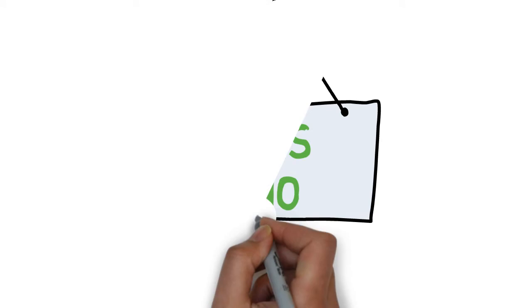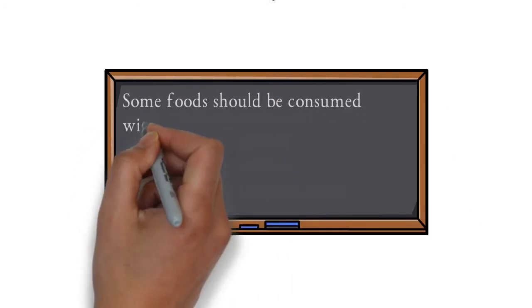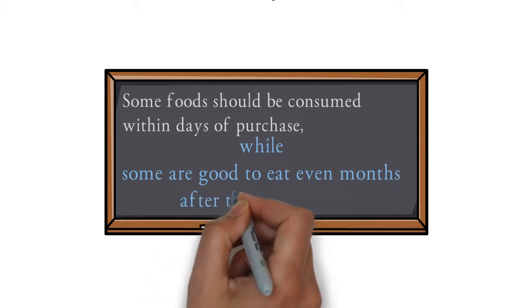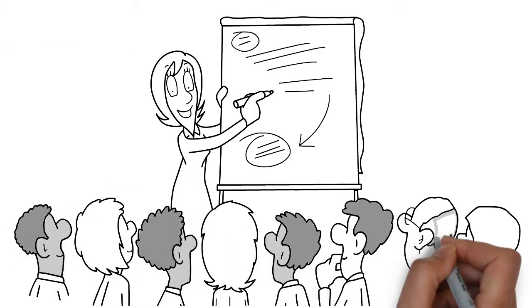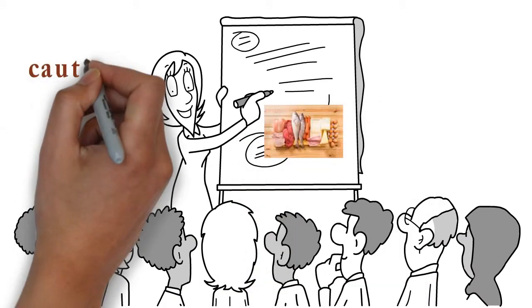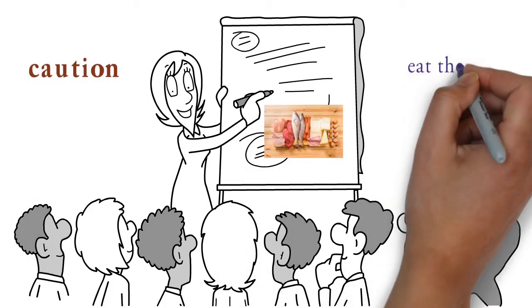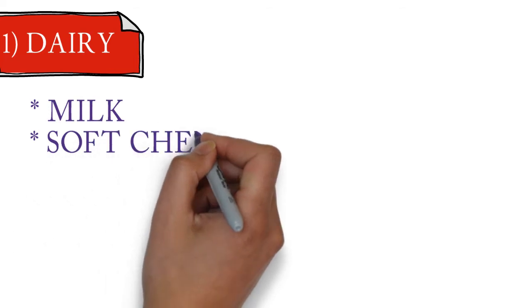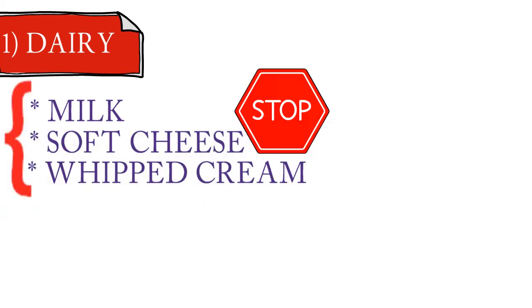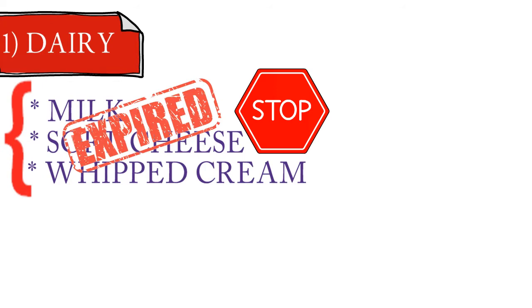Some foods should be consumed within days of purchase, while some are good to eat even months after the expiry date. Let us first talk about some food items where we would strongly advise you to exercise caution and eat them before they expire. Number 1: Dairy. Milk, soft cheese, whipped cream, and other dairy products should not be consumed after the expiry date.